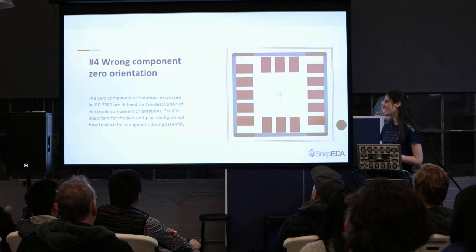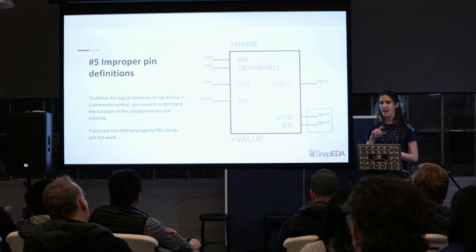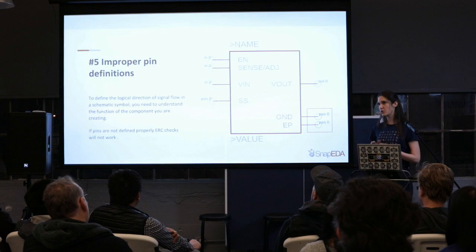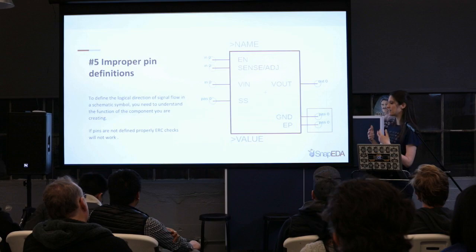And then improper pin definition. When you're thinking about electrical rule checks, having pin types defined properly is really important. When engineers are making their own libraries I see this over and over again — it's just one thing they'll overlook, and then the electrical rule check just doesn't function properly. That would be something like marking an output as power, and then the electrical rule check doesn't find the error — or does find an error when it shouldn't.